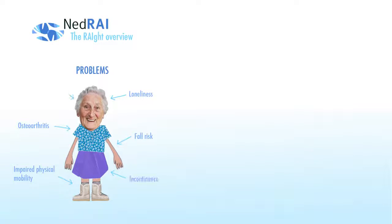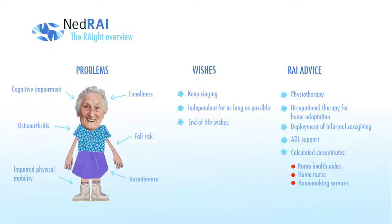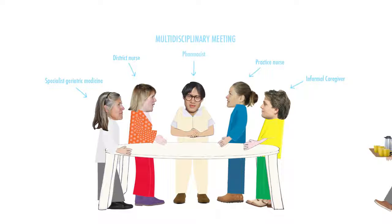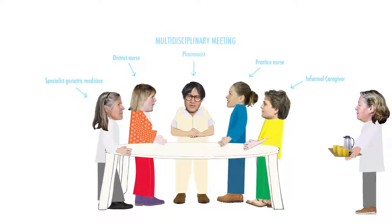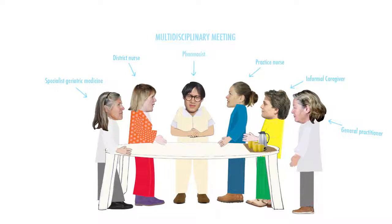RAI produces a report which provides a clear overview of the client, and it also automatically generates advice. RAI even calculates the necessary time Fransje needs regarding home health aids, home nurse and homemaking services, derived from Fransje's assessed abilities and disabilities. Because we now have a complete overview of Fransje's care needs, it's easy to generate a solid care plan. With the assistance of RAI, clients can be discussed effectively in a multidisciplinary meeting. In Fransje's case, it is beneficial to have this meeting once a year, because of her prescribed medication and her increasing forgetfulness. This way, Fransje can live independently in her own home for as long as she wishes.